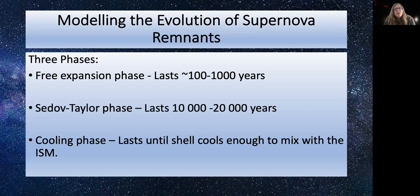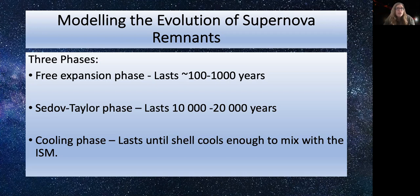The evolution of a supernova remnant can be divided into three different phases depending on what physical processes are happening at the time. Simplified models can be made for at least the first stages, giving us an idea of timescales, the velocity of expansion, and the size of the remnant. The three phases are: the free expansion phase, which happens immediately after core collapse and can last 100 to 1,000 years; the Sedov-Taylor phase, which can last between 10,000 to 20,000 years; and the cooling phase, which lasts until the shell of gas cools enough to mix with the interstellar medium and we can no longer see the supernova remnant.